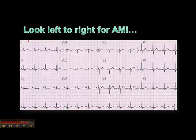It's important to go through this systematically, step by step, starting from left to right. Inferior leads: 2, 3, AVF. Anterior and septal leads: V1 through V4. And lateral leads: V5, V6, lead 1, and AVL.